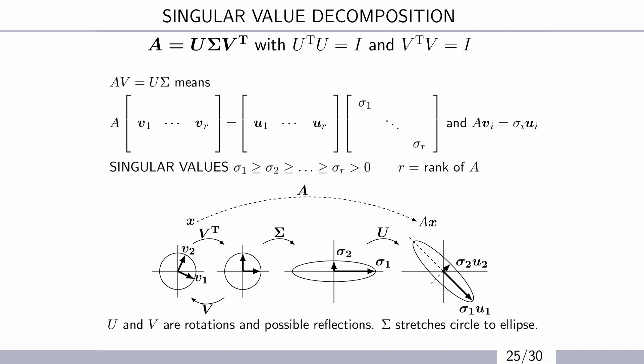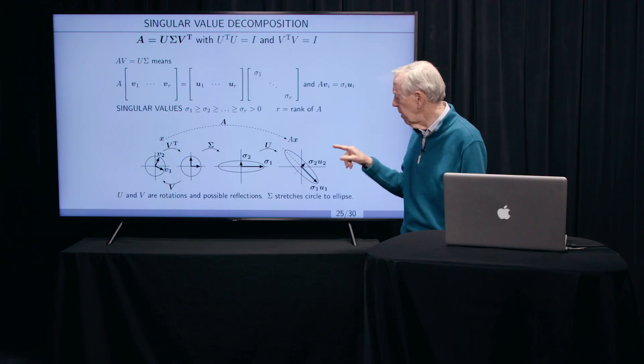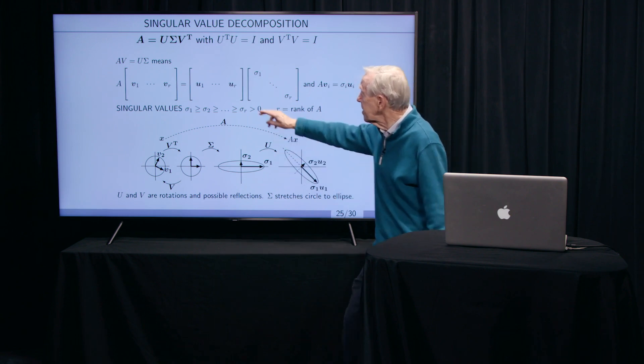Then I'm multiplying by the lambdas. But they're not lambdas now. They're sigmas. The matrix, so that's a capital sigma. So there is sigma 1 and sigma 2. What they do is stretch the circle. It's a diagonal matrix, so it doesn't turn things. But it stretches the circle to an ellipse because it gets the two different singular values in, sigma 1 and sigma 2.